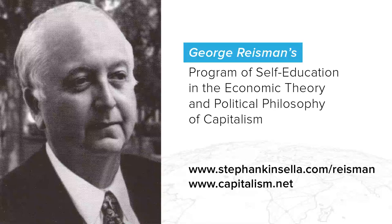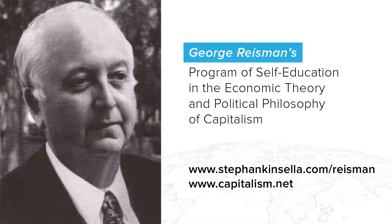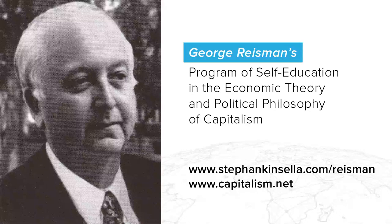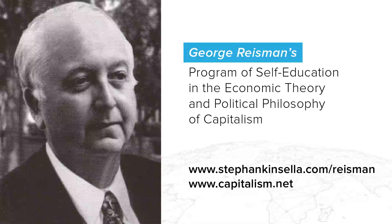You could have the federal government operating at a surplus, and inflation could still go on, if the Federal Reserve system simply creates money and pushes it out into the banking system. For example, suppose the federal government has a surplus, but the Federal Reserve is creating an extra few billion dollars which it turns over to the banks, enabling them to create some more billions of dollars — that is still new and additional money. This occurred in the 1920s: the federal government had a surplus, but the Federal Reserve system was still expanding the quantity of money.